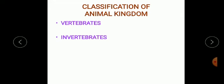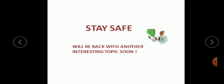Today, we started with classification of the animal kingdom, where we learned that the animal kingdom can be split up into two main groups: vertebrates and invertebrates. Vertebrates are animals with a backbone, while invertebrates are animals without a backbone. We also discussed the five classes of vertebrates. Thank you and stay safe.